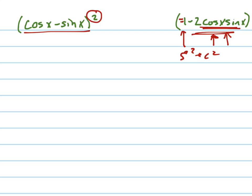So when I square this, I get cosine squared x minus 2 cosine x sine x plus sine squared x.